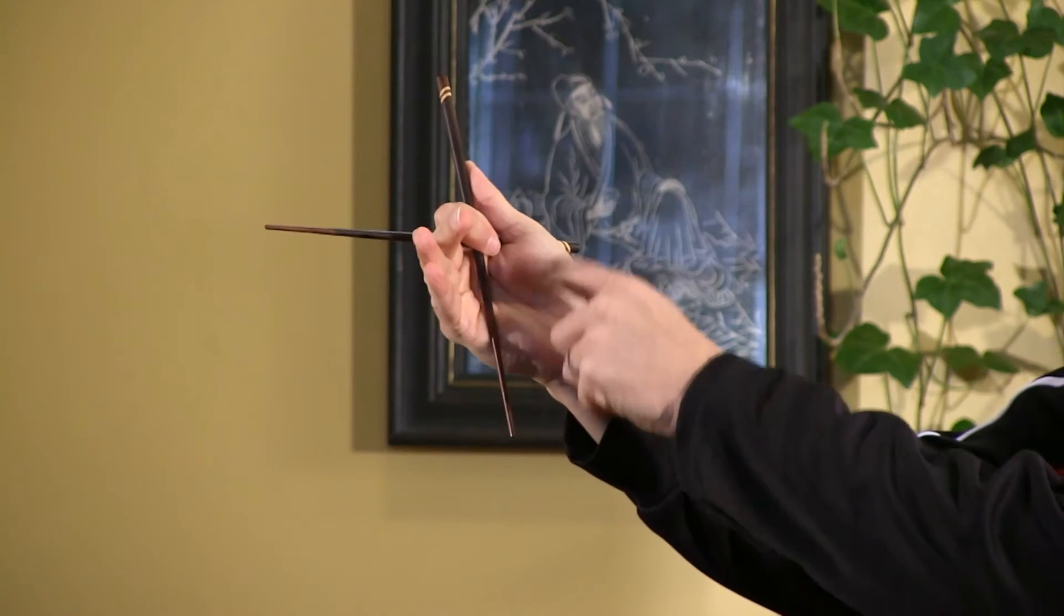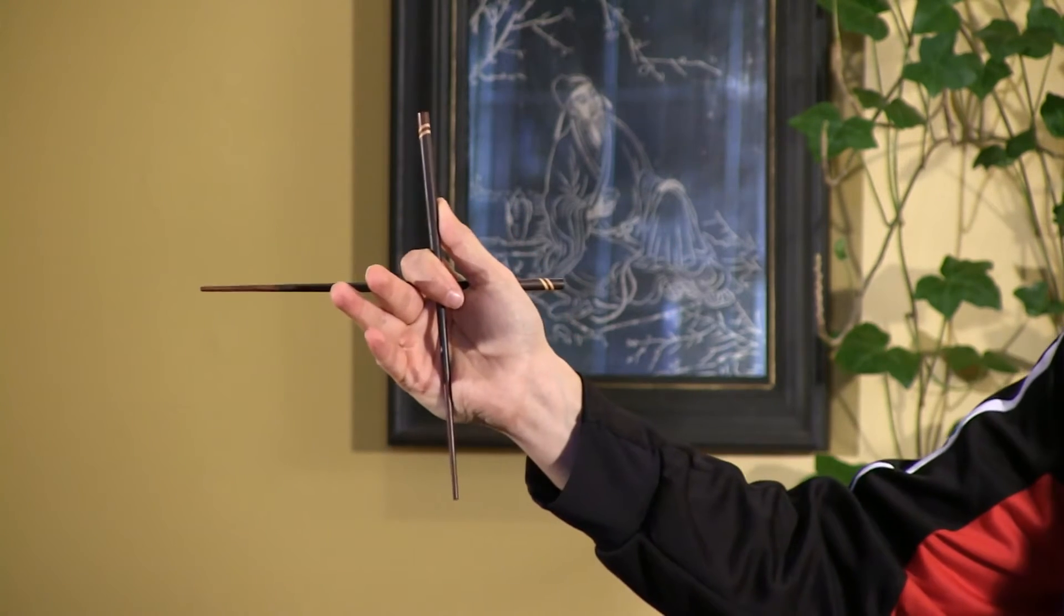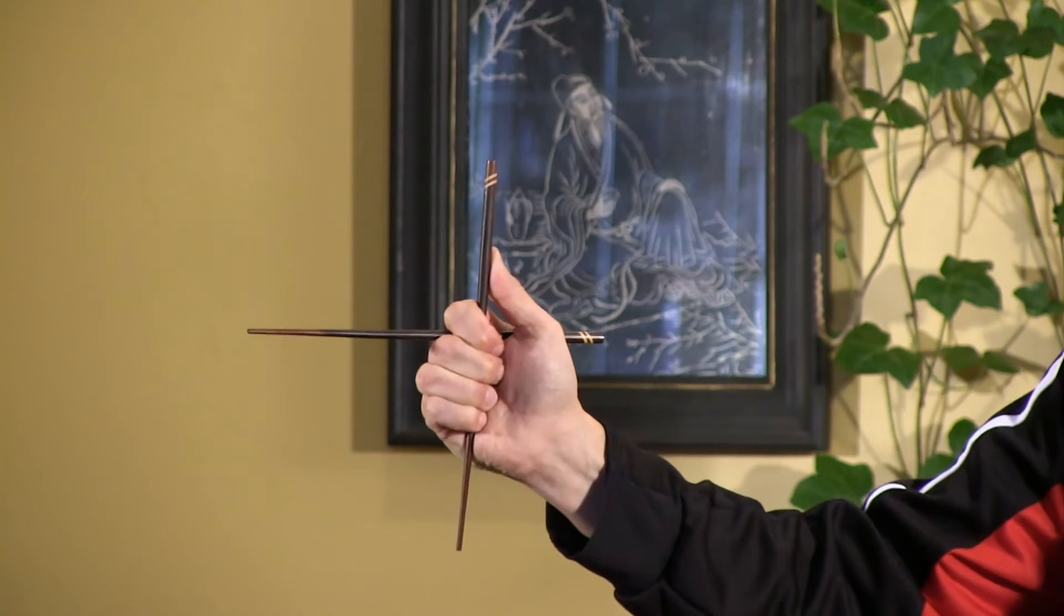Now you're going to have a pressure here that's created by pushing with the thumb. That's going to keep this stick nice and solid. You're going to close the hand, there's going to be an upward pressure here and an upward pressure here. That's going to keep this stick solid.